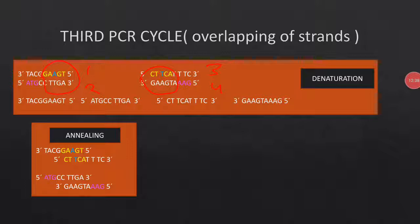What actually happens is that the overlapping regions are bound by hydrogen bonds during annealing: strand one binds with strand three, and strand two binds with strand four. If you want to know what happens when strand one binds to strand two instead, I will explain that.